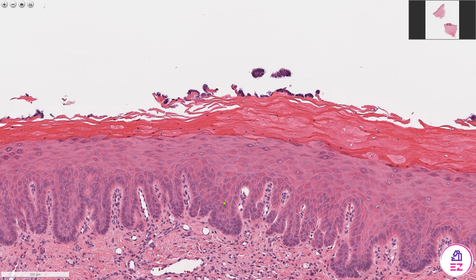When we traditionally grade dysplasia, we do that in thirds — looking at the degree of change affecting the lower, mid, and upper thirds of the epithelium. Most of the changes I've pointed out are occurring in the lower two-thirds; the upper third is relatively unaffected. That's why I would call this moderate epithelial dysplasia. If you enjoyed this video and found it useful, please don't forget to like and subscribe to Path Made Easy.